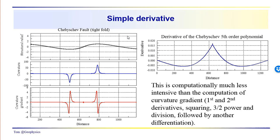Now here we're just using a simple derivative. If we take the derivative of this structure, we get a peak in the derivative located at the inflection point. Think about it — this is computationally much less intensive than the computation of the curvature gradient, which if you remember the formula involves first and second derivatives of the function. We square the first derivative in the denominator, take one plus the square of the derivative and raise that to the three-halves power, divide that into the second derivative in the numerator, and then follow that by another differentiation to get the curvature gradient. So this is computationally much less expensive and very simple — it does much less to the data.